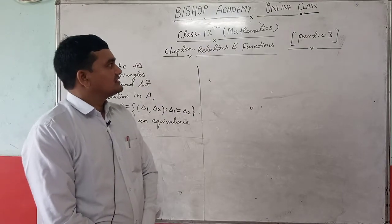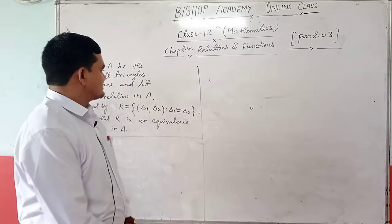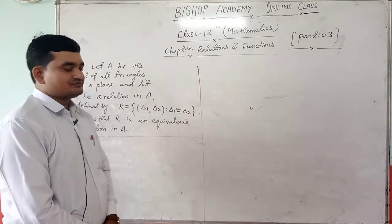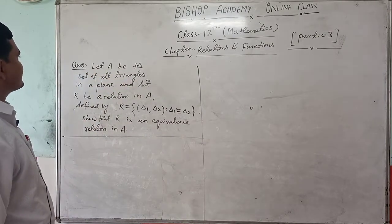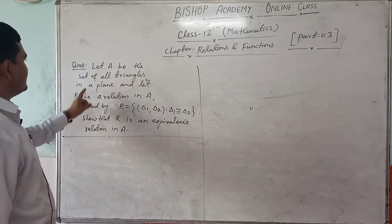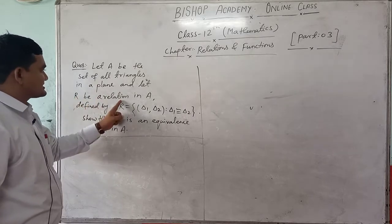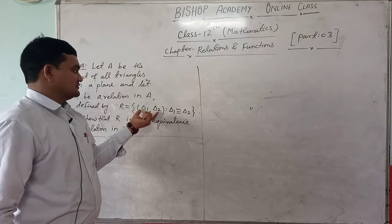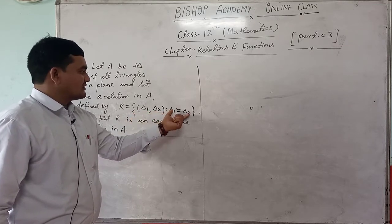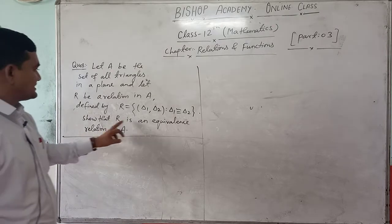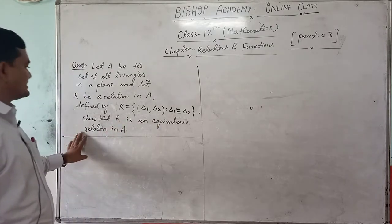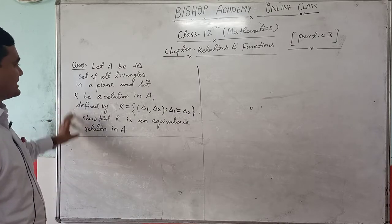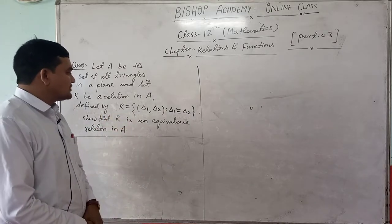Now students, in part 3 video we will start a question which is related to relations. The question is: let A be the set of all triangles in a plane and let R be a relation in A defined by R equals {(Δ1, Δ2) such that Δ1 is congruent to Δ2}. We will prove that this given relation is an equivalence relation in set A.